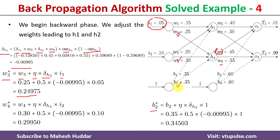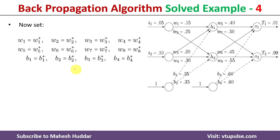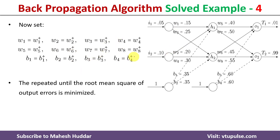Now we replace all old weights with the new updated weights, which completes one epoch. After one epoch, we have propagated the input forward and calculated and reduced the error. If the error is acceptable, we stop; otherwise, we propagate again with the new weights, recalculate the error, and repeat the process until the error is minimized to an acceptable level. This is how the back propagation algorithm works. If you liked the video, please like, share, subscribe, and press the bell icon for updates.